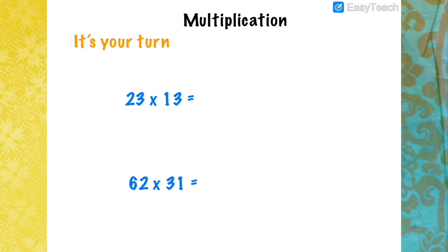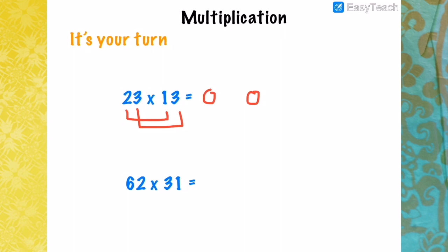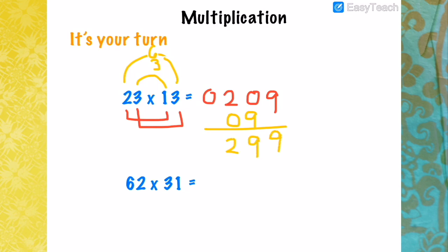Now it's your turn. For the example 23 times 13: multiply the tens place — 2 times 1 is 2. Multiply the ones place — 3 times 3 is 9. Multiply the innermost value — 3 times 1 is 3. Multiply the outermost value — 2 times 3 is 6. Add 3 and 6 to get 9. Then add the numbers: 2, 9, 9. Therefore 23 times 13 is 299.